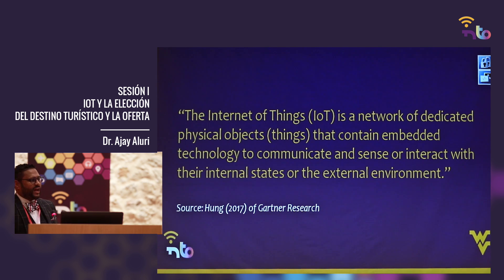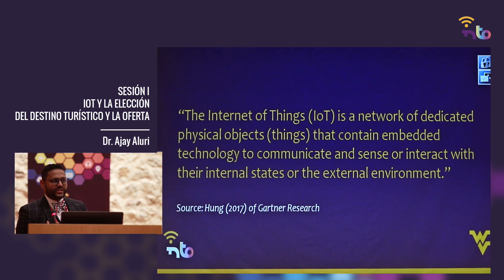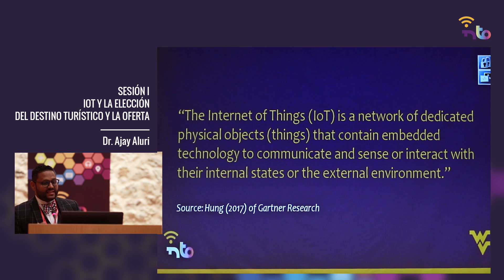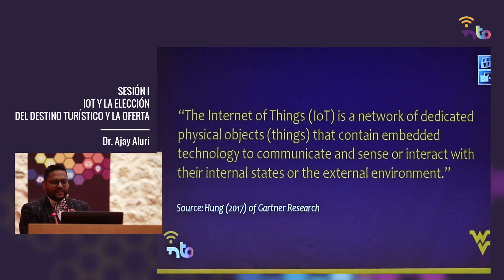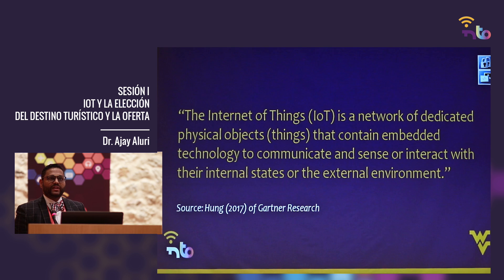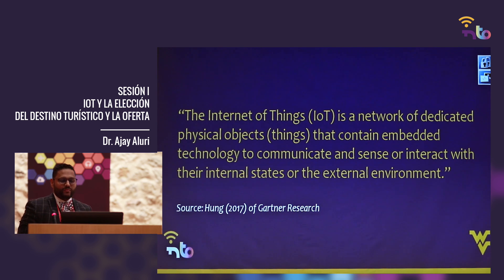Let's look at what IoT is in general. It's a network of dedicated physical objects — we call them devices — but they can be physical objects that contain embedded technology. It's used to communicate, sense, or interact with the internal and external environment. The key is that physical objects with embedded technology should be able to communicate, but also sense and interact. In a traditional world, technologies don't interact with us — we always have to find out what's going on with them.